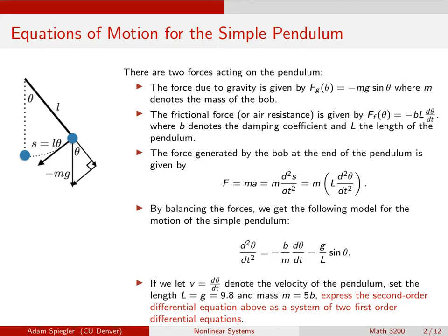The force generated by the bob, right, using Newton's second law, that's going to be the mass times the acceleration. So the mass is a constant M. The acceleration, we can write as the second derivative of our position. So the distance that we've traveled is S. And then our acceleration is going to be the second derivative of that. And again, using some of the geometry over here, we could show that this is equal to M times the length of the pendulum times the second derivative of the angle with respect to time.